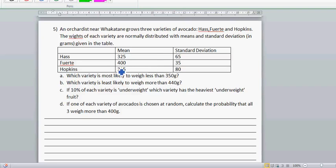An orchardist near Whakatane grows three varieties of avocado: Hass, Fuerte, and Hopkins. The weights of each variety are normally distributed with a mean and standard deviation in grams given in the table. Which variety is most likely to weigh less than 350 grams?